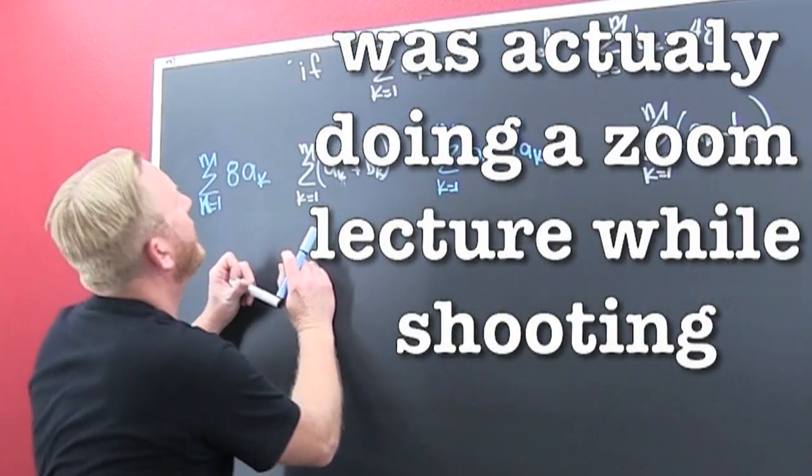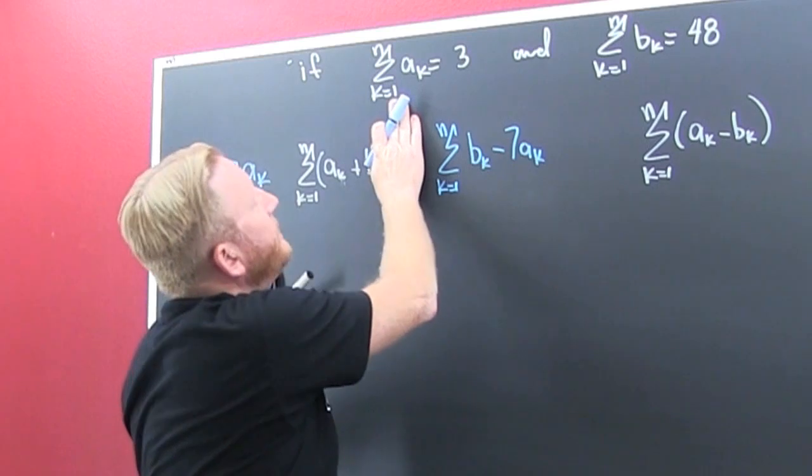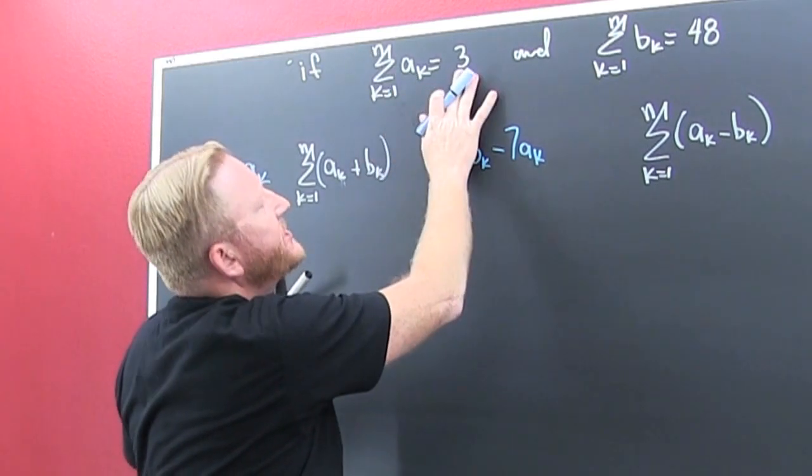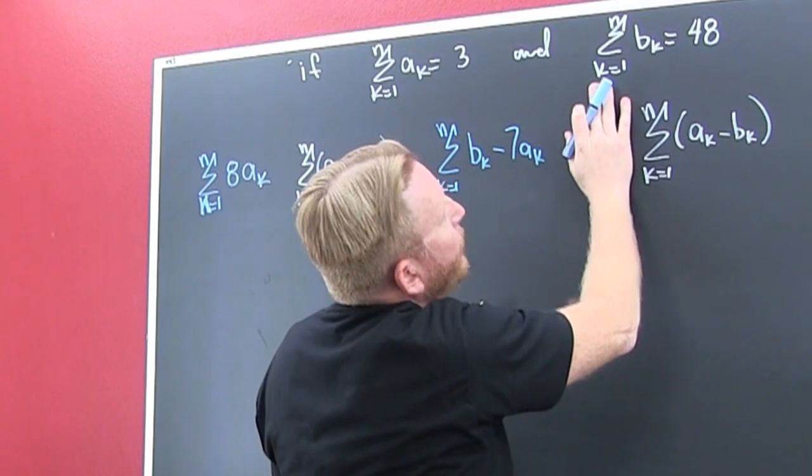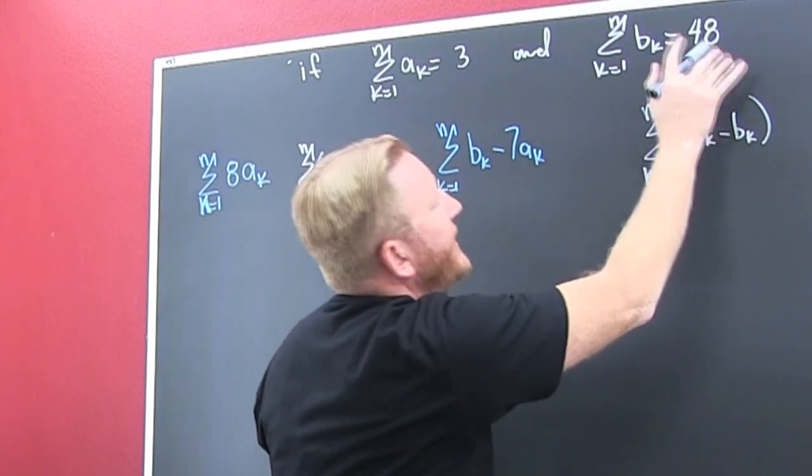So what do we have? All right, I have that the sum K from 1 to N of AK is 3, and the sum K equals 1 to N of BK is 48. Great.